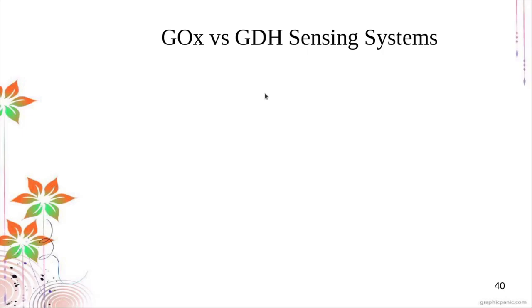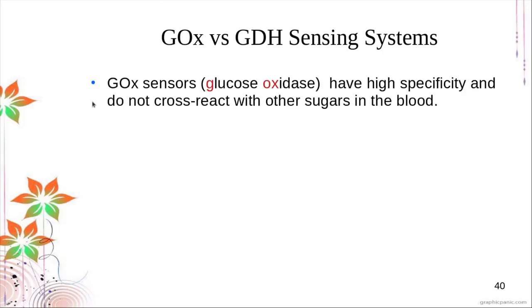There are two types of glucose sensing systems available in the market: glucose oxidase (GOX) and glucose dehydrogenase (GDH). GOX sensors, which are the most commonly seen here in the Philippines, have high specificity for glucose compared to GDH systems.